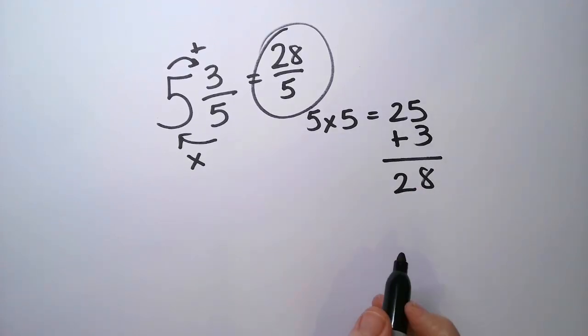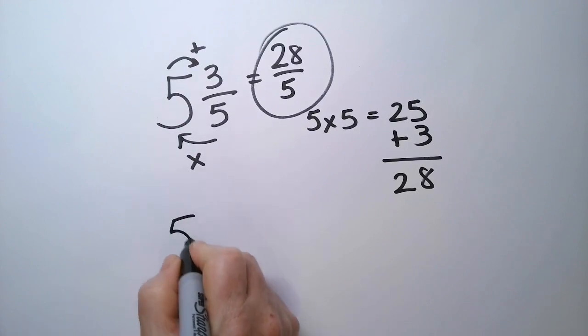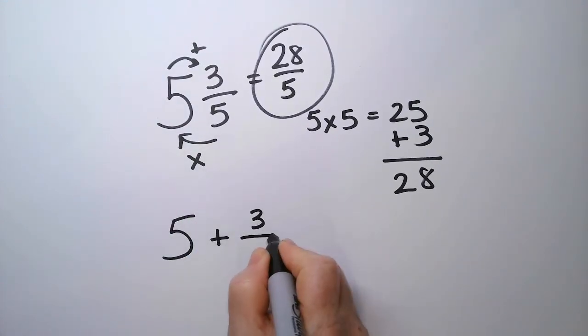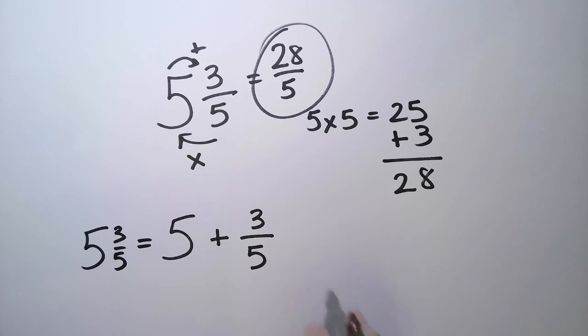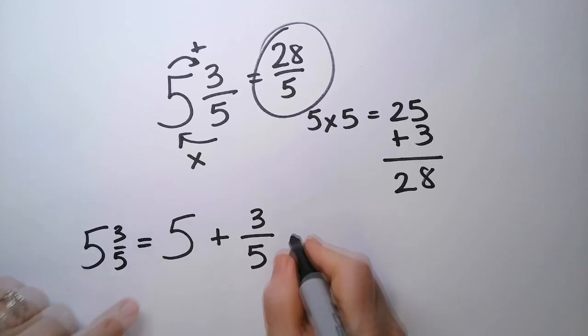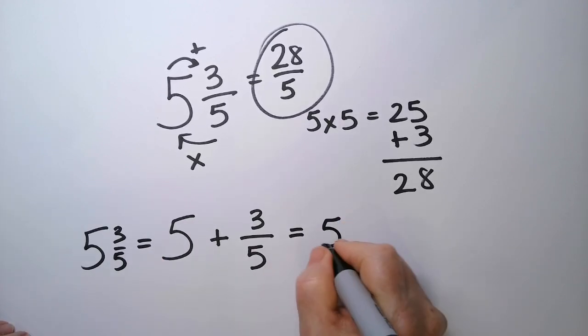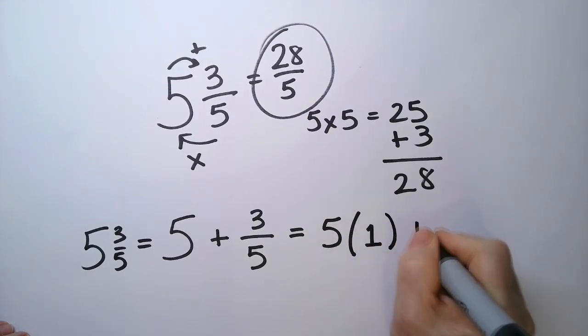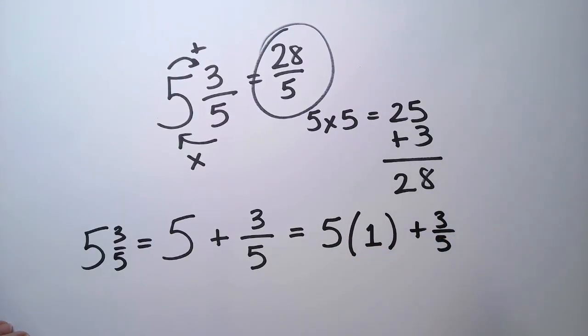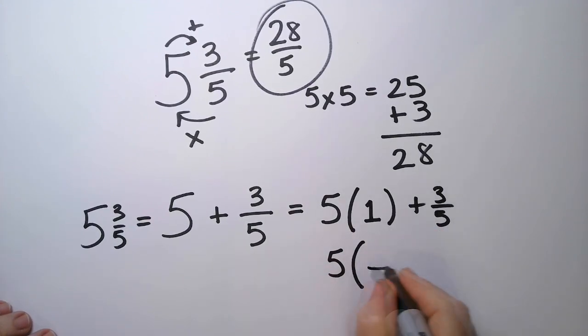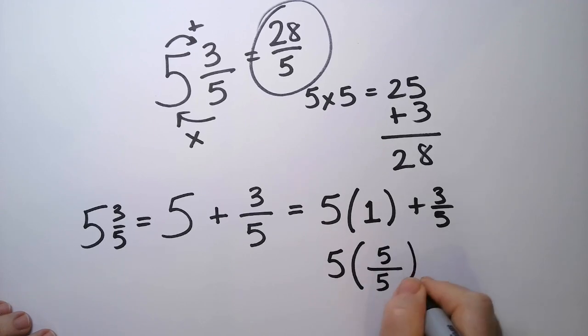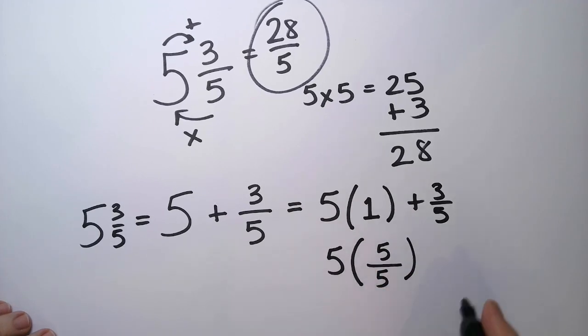Another way you can think about this is that we have 5 and 3 fifths. That's the same as saying 5 and 3 fifths. Okay? And then this 5 is the same as saying 5 times 1 plus 3 fifths. And then this 1 is, if I want the same denominator here, I can say 5 over 5, right? Because this is 1 plus 3 fifths. Okay?